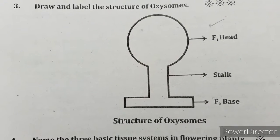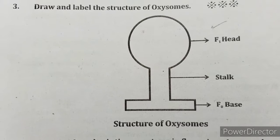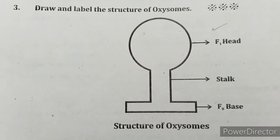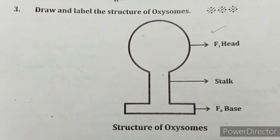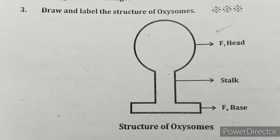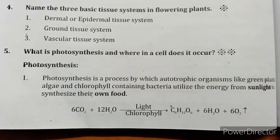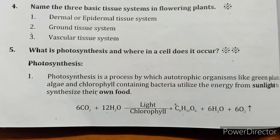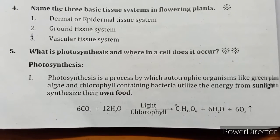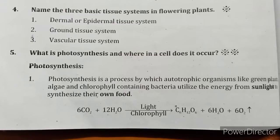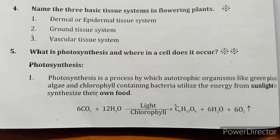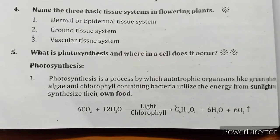Draw and label the structure of oxysomes. Name the three basic tissue systems in flowering plants: dermal or epidermal tissue system, ground tissue system, and vascular tissue system.